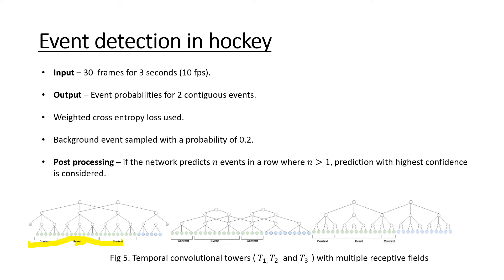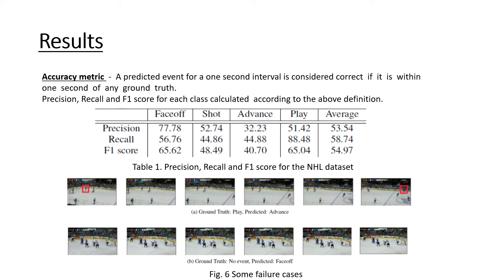We know that events such as face-off, shot, and advance are less likely to happen simultaneously. So if the network predicts N events in a row where N is greater than 1, the prediction with highest confidence is considered. For the results on the hockey dataset, a predicted event for a one-second interval is considered correct if it is within one second of any ground truth, and the precision, recall, and F1 score for each class is calculated accordingly. The precision for face-off is pretty high at 77, and we have acceptable F1 scores for face-off and play. Advance is not doing too well, because advance is often mistaken as play — the network is not always able to understand the temporal context well, as illustrated in this figure.